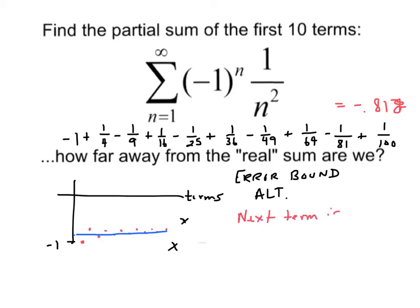The error bound for an alternating series is simply whatever the next term is. And the reason is, as I said, we're not going to bounce past, up or down, what the next term is.